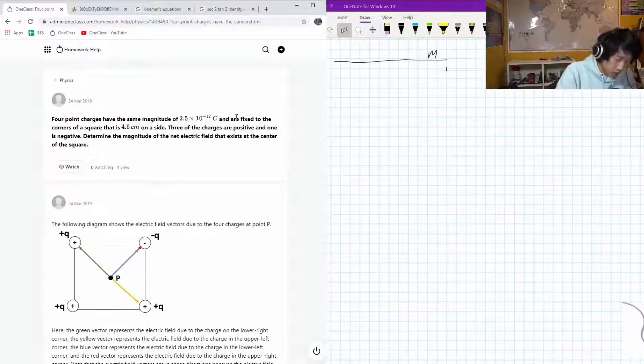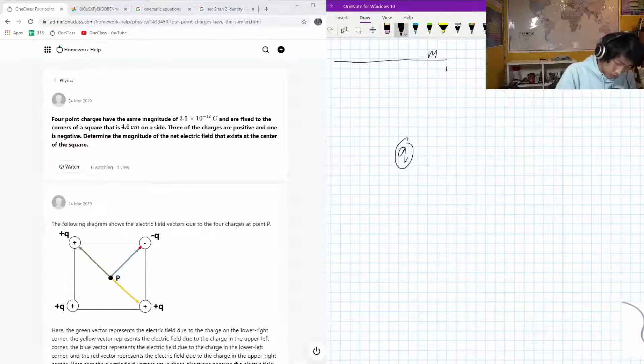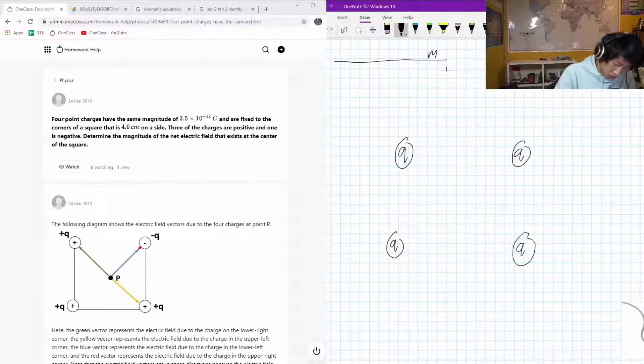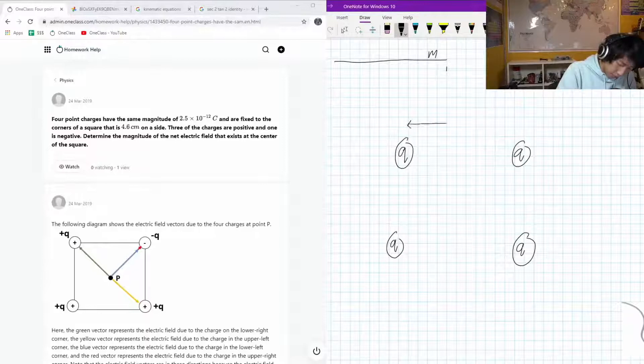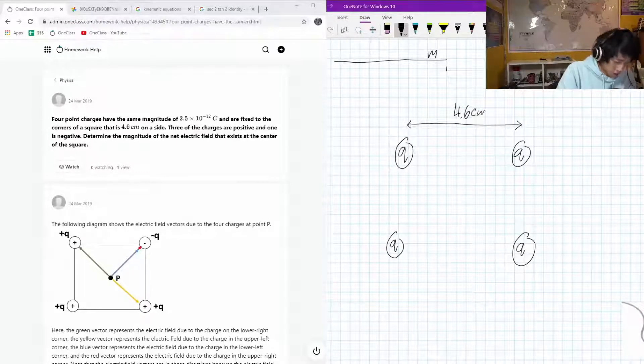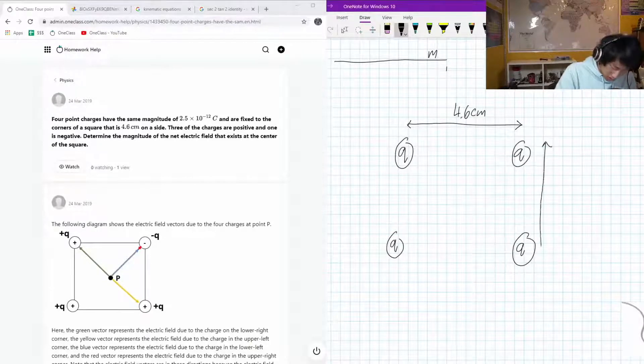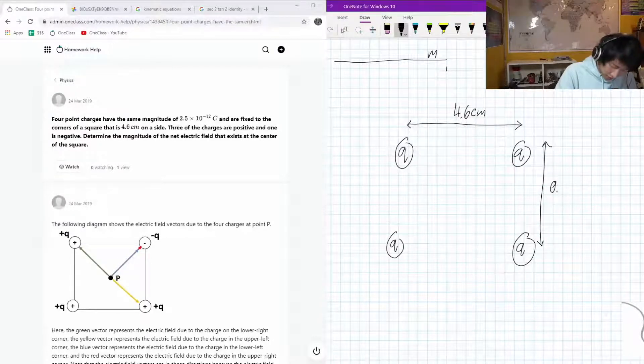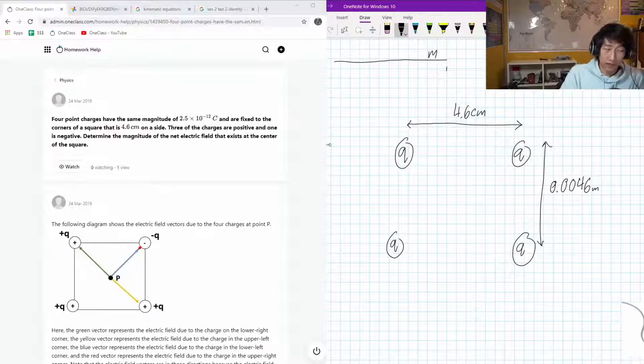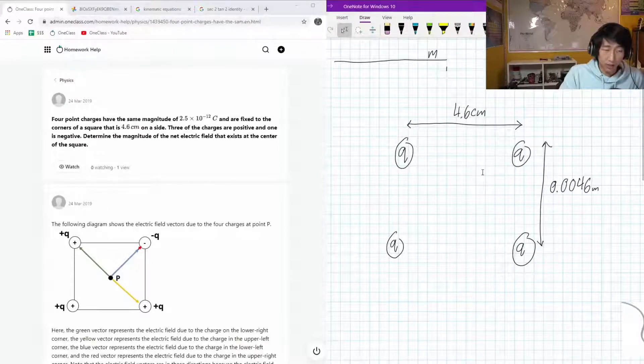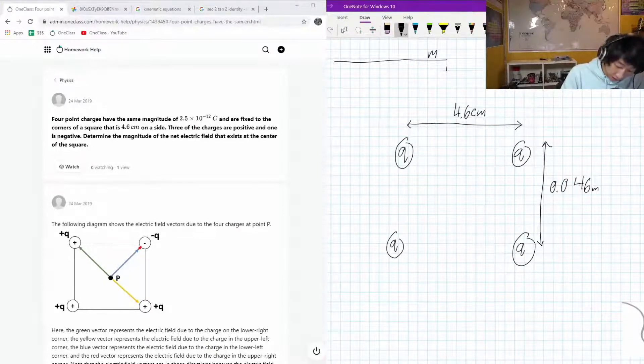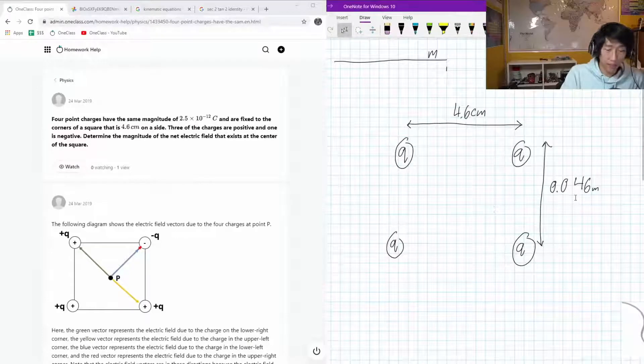So let's actually draw the situation. At 4.6 centimeters, this is 0.0046 meters, the same thing as 4.6 centimeters. Actually, that's not the same - I got an extra zero in there. My bad, it's 0.046 meters. Okay, that's the same.